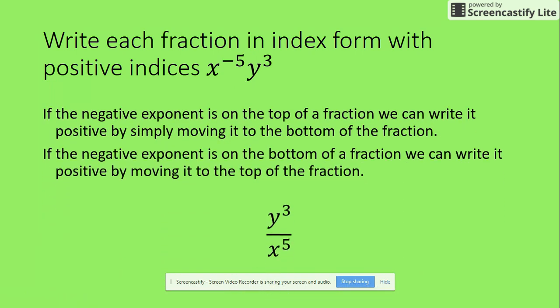If we move it down, there's our rule again. So now we've got y to the power of 3, so it remains on the top. We move the x to negative 5 to the bottom and then it becomes positive. So x to the power of 5.